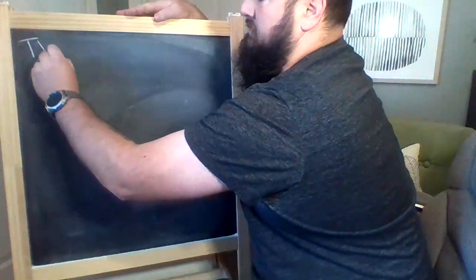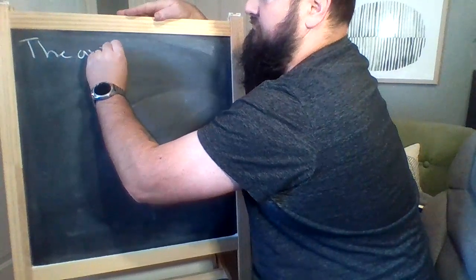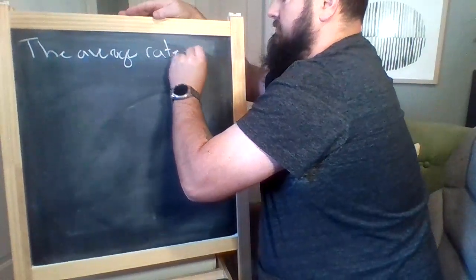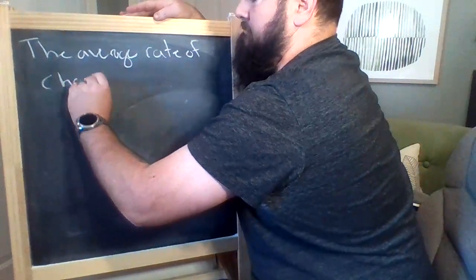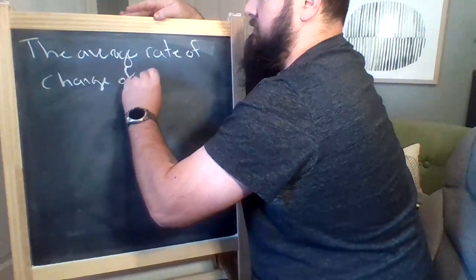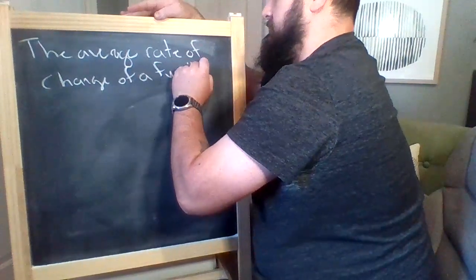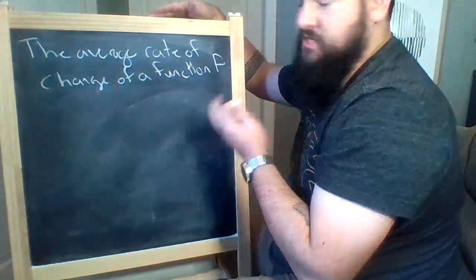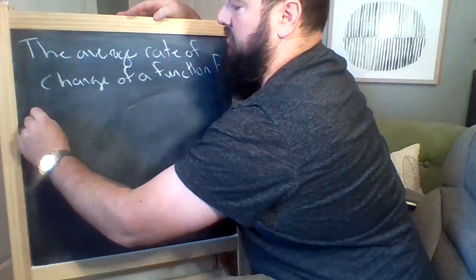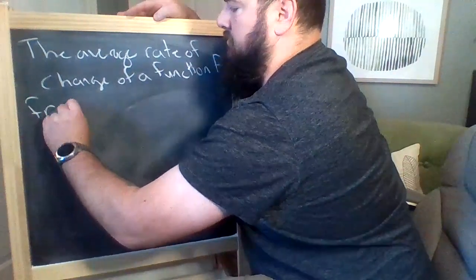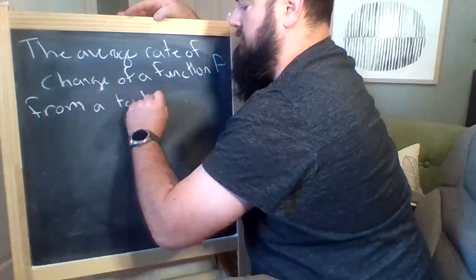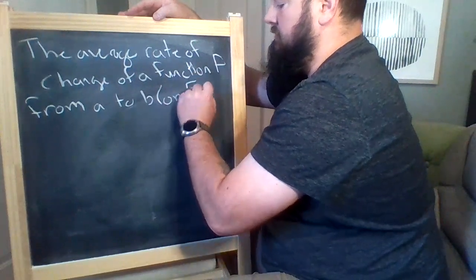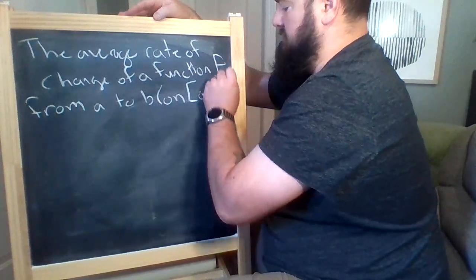So the average rate of change of a function, say f, so that's our function name, from a to b, that's one way to do it, or another way is to say on [a,b].